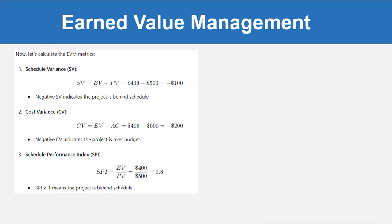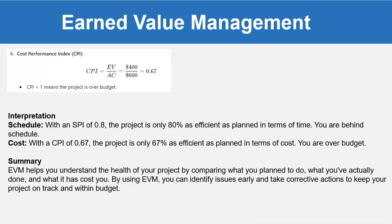Schedule Performance Index: SPI = EV divided by PV = 400 divided by 500 = 0.8. Since SPI is less than 1, the project is behind schedule. Cost Performance Index: CPI = EV divided by AC = 400 divided by 600 = 0.67. Since CPI is less than 1, the project is over budget.